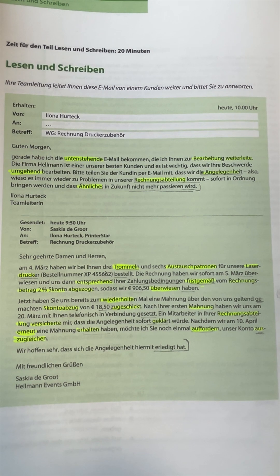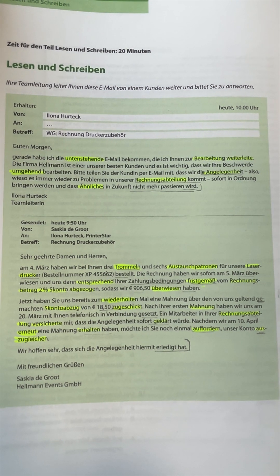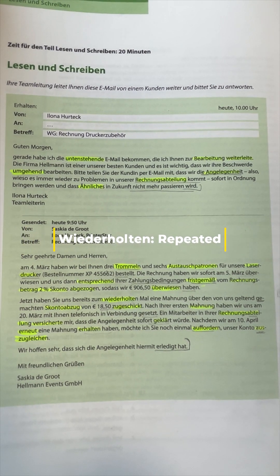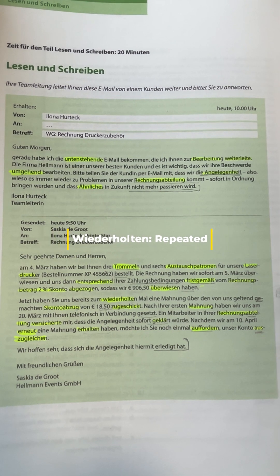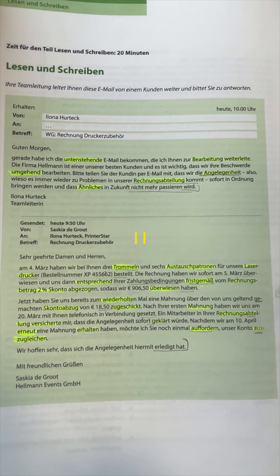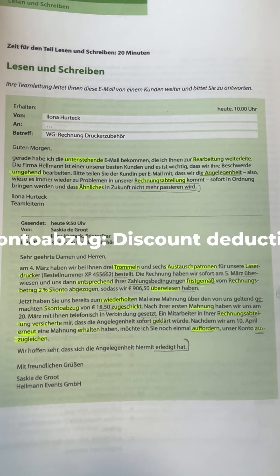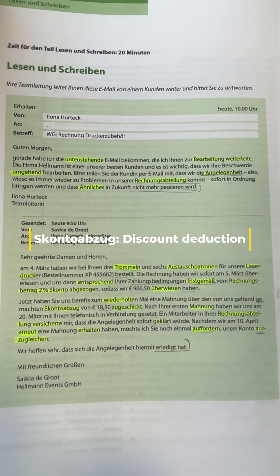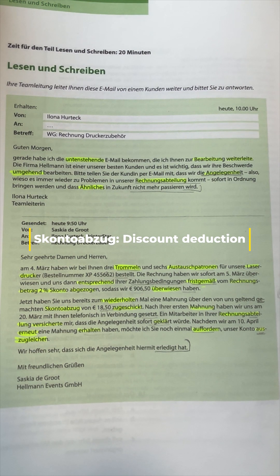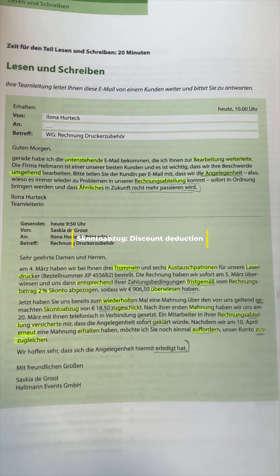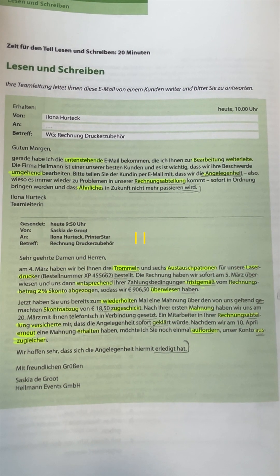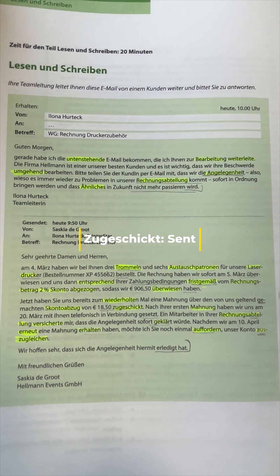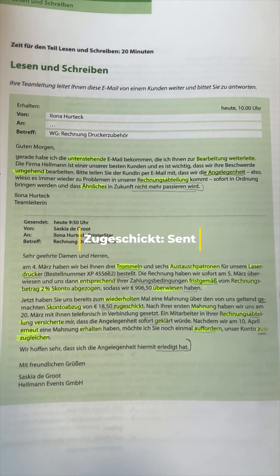After this we have 'wiederholen' — wiederholen means 'repeated.' After wiederholen we have 'Skonto Abzug' — Skonto I have already told you means 'discount,' and Abzug means 'deduction,' so Skonto Abzug means 'discount deduction.' After this we have 'zugeschickt' — zugeschickt means 'sent.'